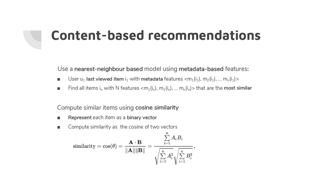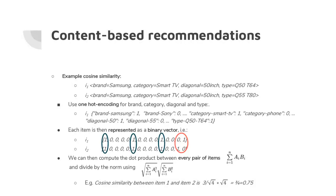We compute similarity using cosine similarity, where each item's metadata features are represented as a binary vector. The cosine is computed in an N-dimensional space over these N features. For example, two Samsung 50-inch smart TVs with different type numbers have a cosine similarity of 0.75 — pretty high similarity, so clicking on the first item makes the second a good suggestion.